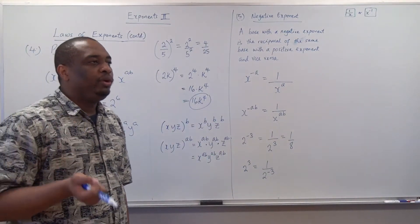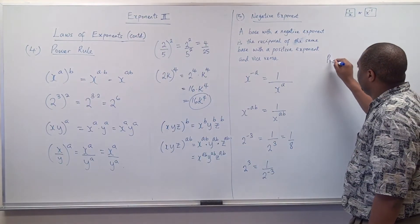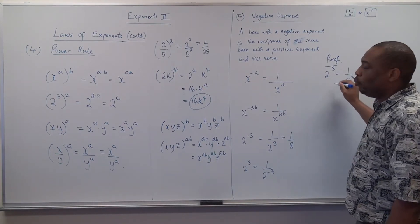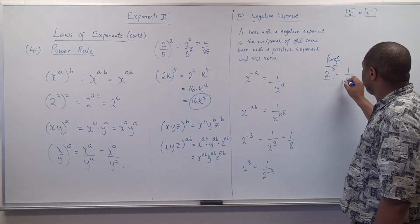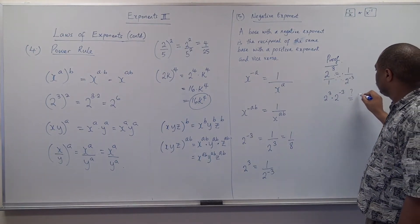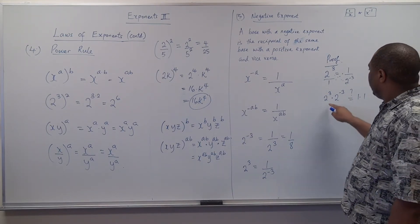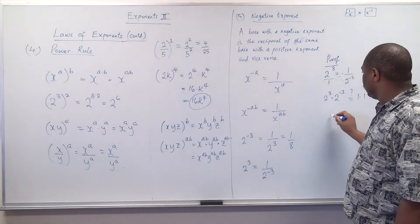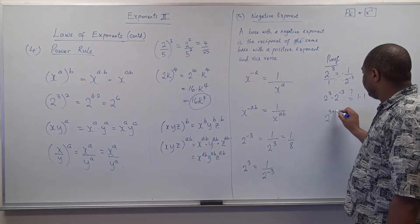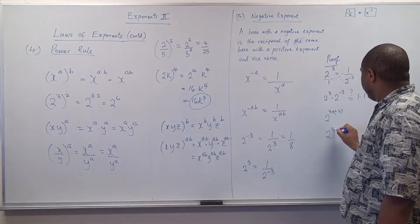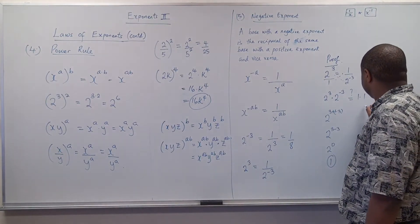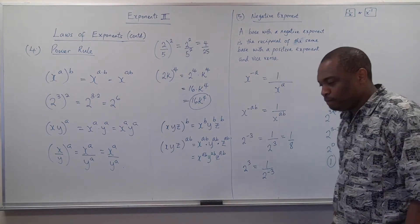Let's prove why this is so. If we have 2 raised to power 3 equal to 1 over 2 raised to negative 3, and we cross multiply, we get 2 raised to power 3 times 2 raised to power negative 3. Since it is the same base, we add the exponents: 3 plus negative 3 equals 0, giving 2 raised to power 0. And remember that anything to the zero exponent is 1, so 1 equals 1 — proven.